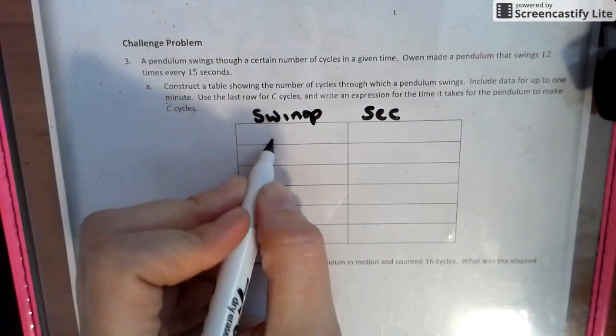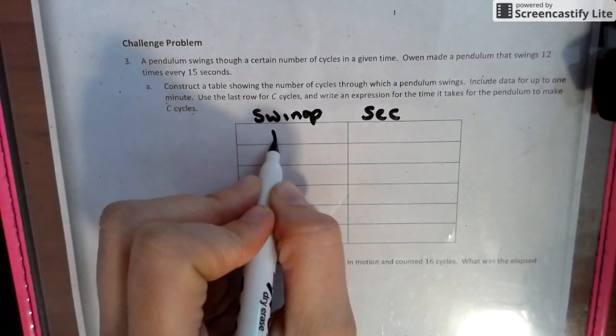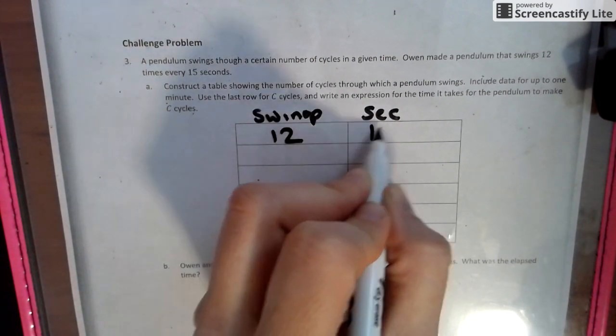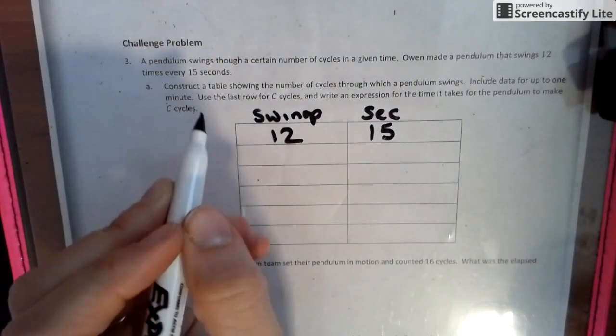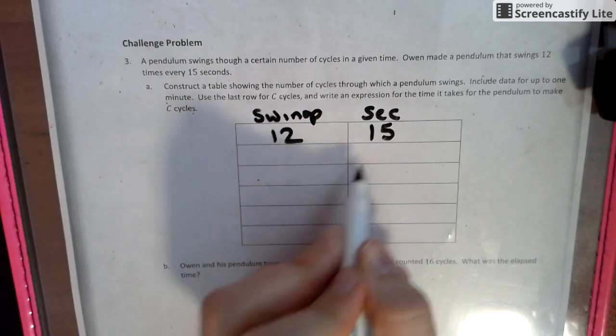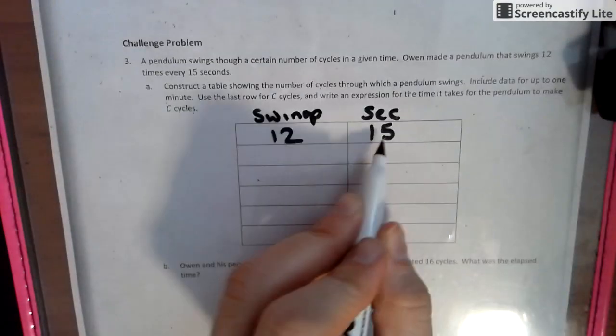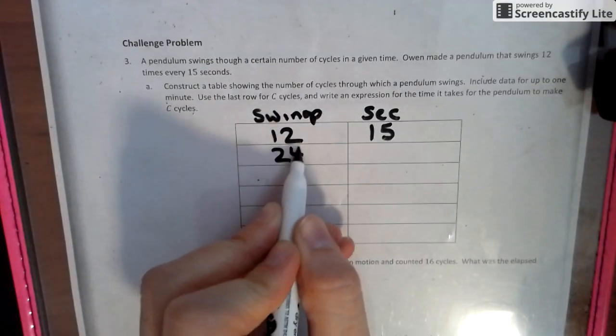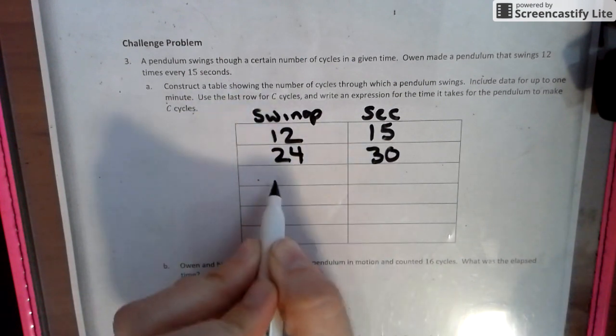So we know that the first time it swings, it's 12 swings, 15 seconds. And we know we got to go up to a minute. So for every 12 swings, 15 seconds. So 24 swings, 30 seconds.